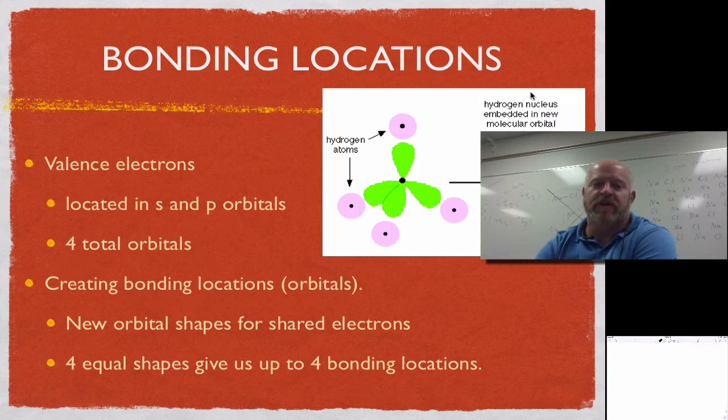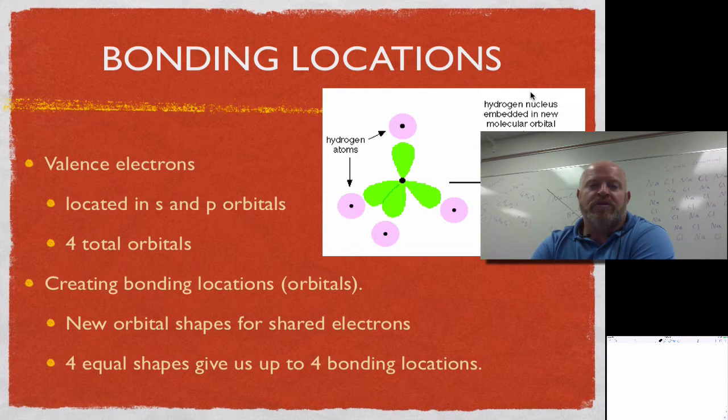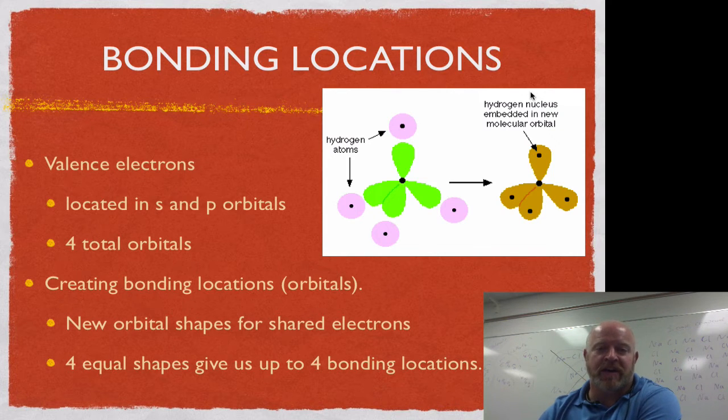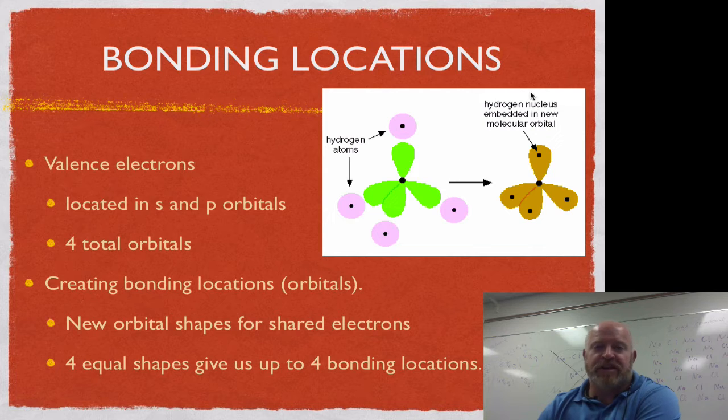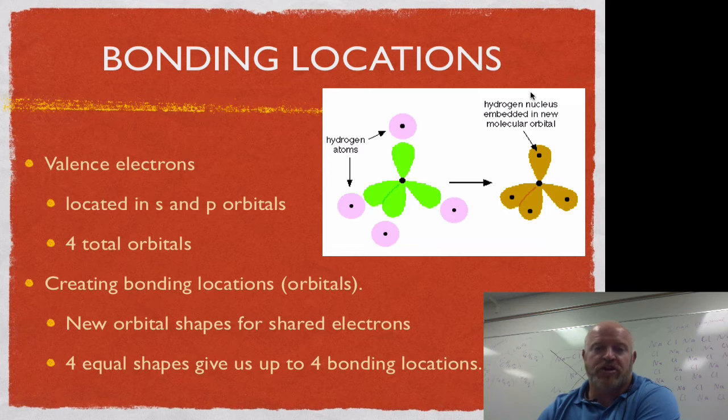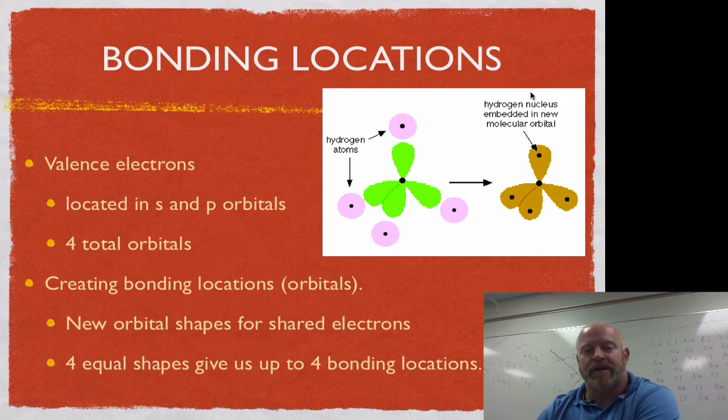When we start looking at molecules, one thing we have to note is how do they bond or where does this bonding occur? For ionic compounds, you have a transfer of electrons, and then what holds them together is the positive charge and that negative charge. There is no charge attraction for molecules. What holds them together is what we're looking at here—we need to have a bond, and that bond we call a covalent bond.